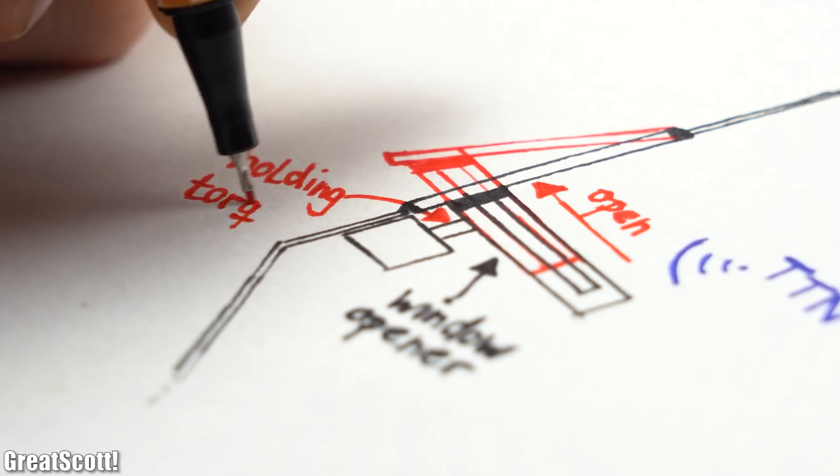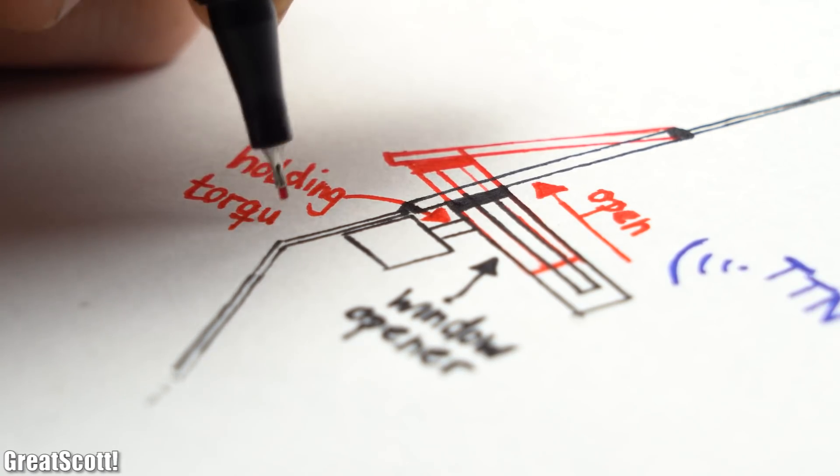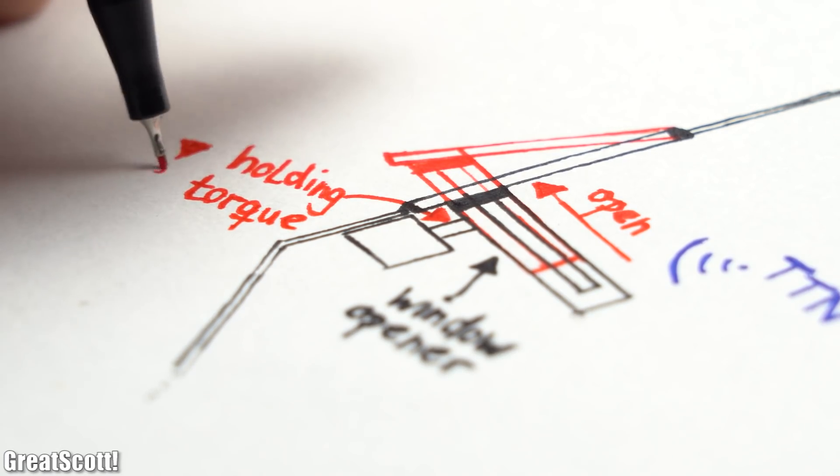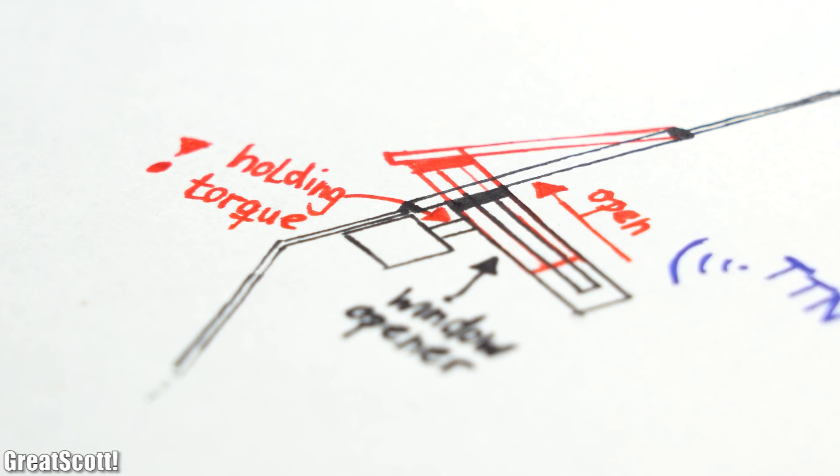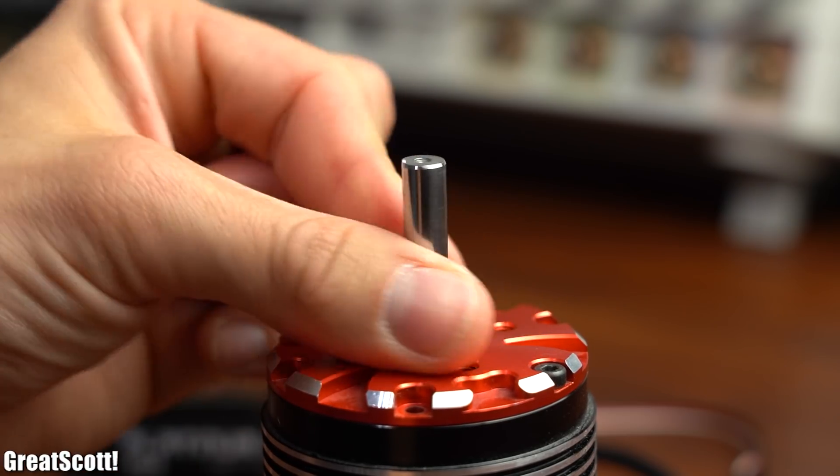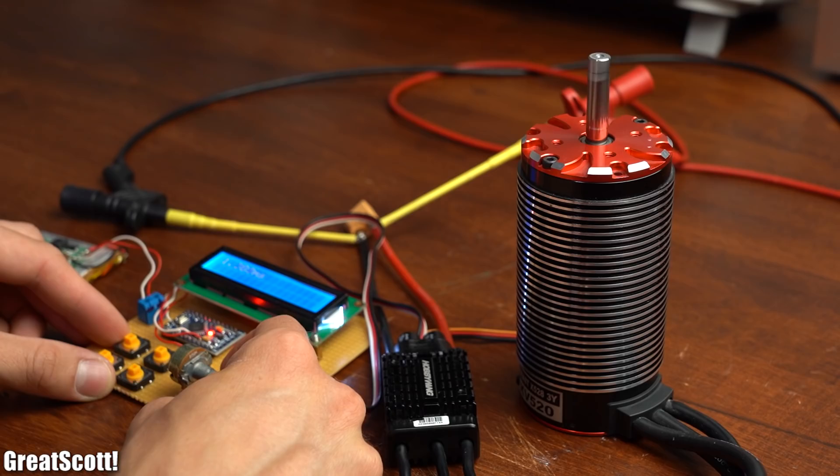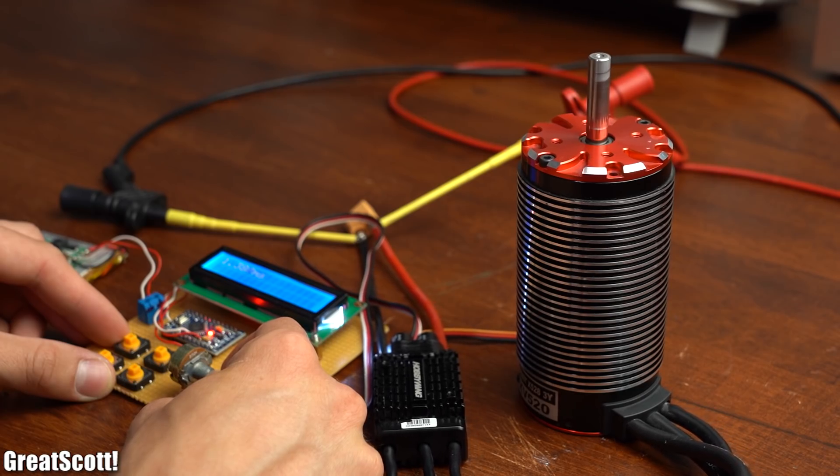Now the biggest challenge for the motor will be the holding torque which is required to hold the window in the open position and not let it roll back down. That means the BLDC motor is out because common ESCs which are necessary to power them do usually not come with a holding torque option.